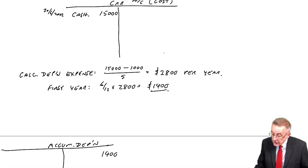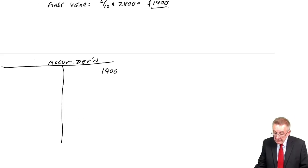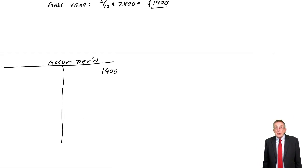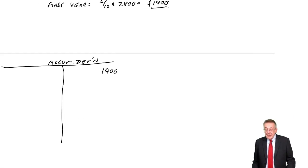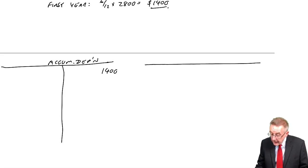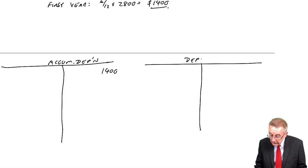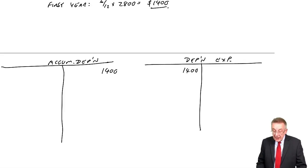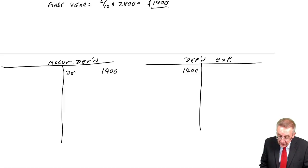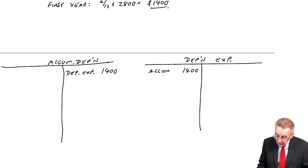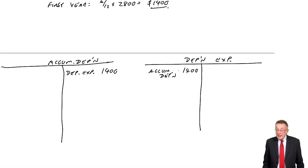So we credit accumulated depreciation — that's the double entry. The cost of what we've done: we debit the depreciation expense account. Credit accumulated depreciation, debit the expense. That's just that one entry.